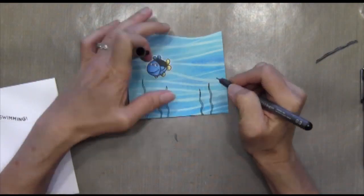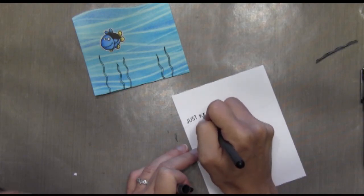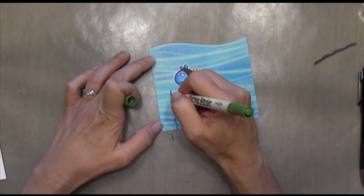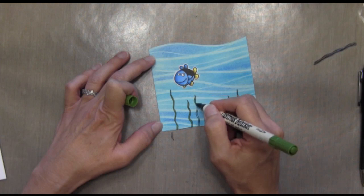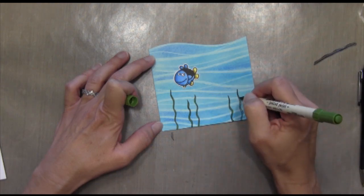And I'm going to fix them a little bit with my multiliner. And then I also noticed that my sentiment didn't stamp quite as clear as I would have liked. So I went ahead and outlined that also. And this is Peeled Paint Distress Marker. So it's just a green color and color that in.